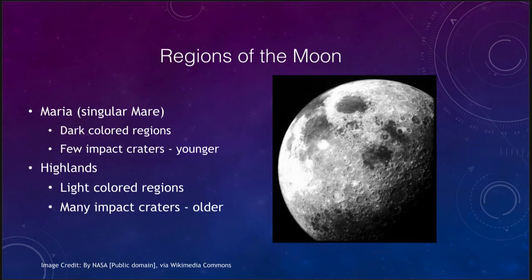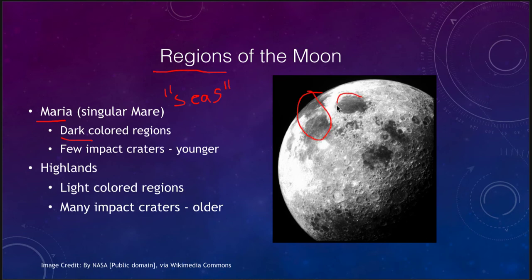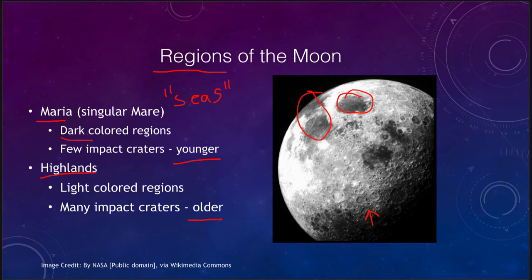The different regions of the moon include the Maria — singular: mare — named for seas, not because they have anything to do with water, but perhaps because ancient astronomers thought they looked like watery areas. We now know they are very dark colored regions with very few impact craters, making them younger areas. The lighter colored regions are the highlands, which have many impact craters, making them significantly older parts of the moon. The number of craters on an object tells us something about its age.